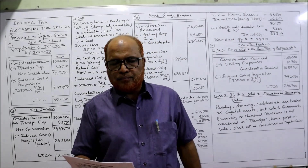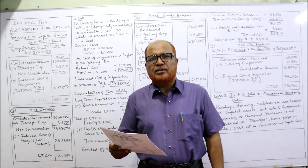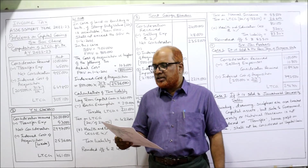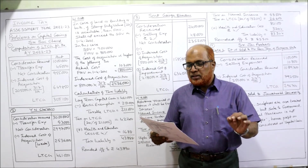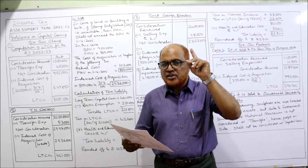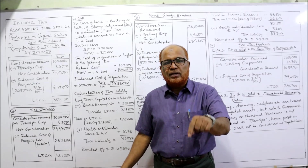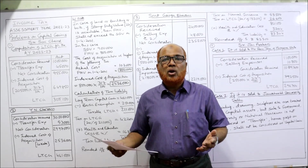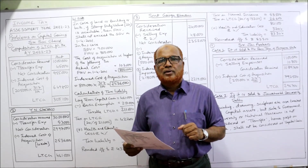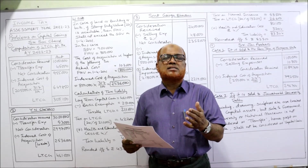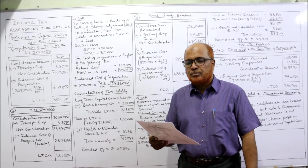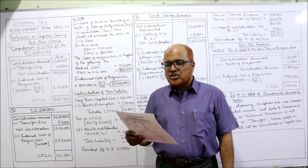Now, see the first problem. Sri Sai Chand purchased gold ornaments for Rs. 2,05,000 in the financial year 2001-2002. During the previous year, he sold the ornaments for Rs. 10,00,000. The year of purchase is 2001-2002 and year of sale is 2021-22. It is a long-term capital asset — more than three years. So it is a long-term capital asset and the gain arising will be long-term capital gain. Transfer expenses are Rs. 45,000. The cost inflation index in the year of purchase was 100 and in the year of sale, the current previous year, it is 317. Compute the income from capital gain.